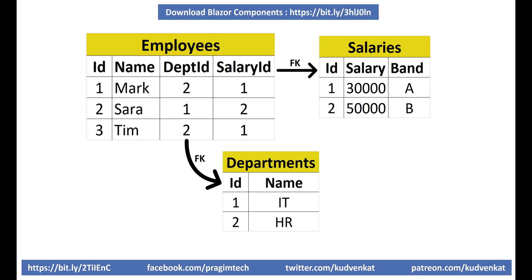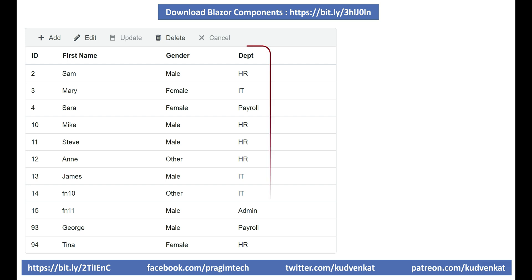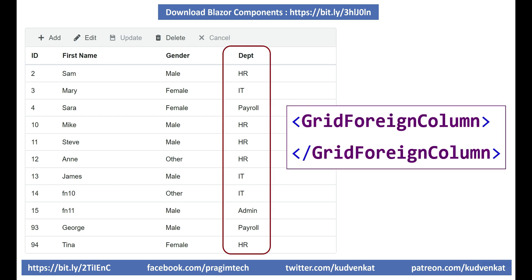Here's what we want to be able to do: display department name in the data grid along with employee first name, last name, etc. Department name is present in the departments table and it is linked to the employees table through the foreign key dept id. So to display department name in the data grid, we use the GridForeignColumn component. We'll see this in action in just a bit.